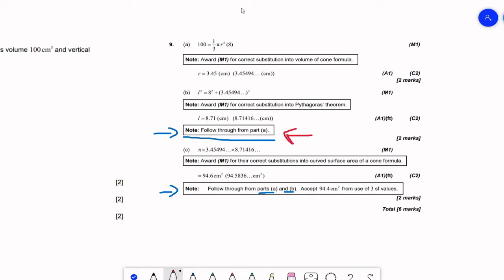Even if you follow through with, for example, part A, if you get a negative value for R, like if you somehow put a negative sign here and end up with negative 3.45, and you do everything with a negative radius even though it doesn't make sense, if you follow the process the guys that grade you are obligated to give you points for following through the process.